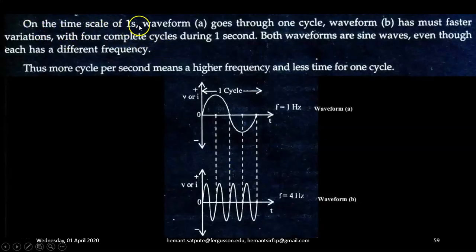On the time scale of one second, waveform A goes through one cycle while waveform B has much faster variations with four complete cycles during one second. During one second, waveform B completes first cycle, then second cycle, then third cycle, and fourth cycle. In the same time period, waveform A completes one cycle while waveform B completes four cycles.